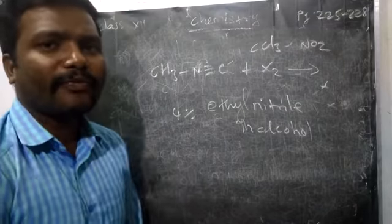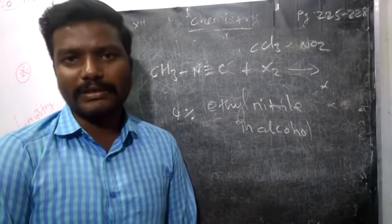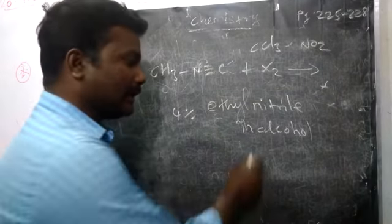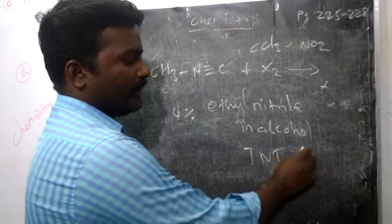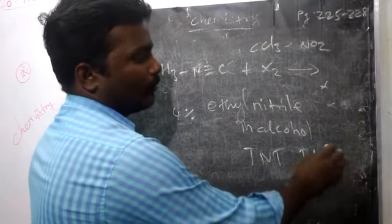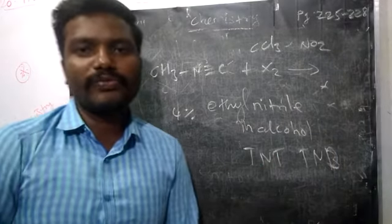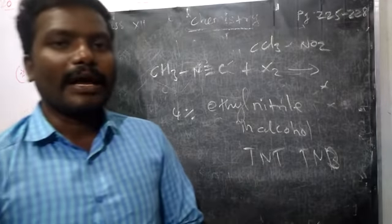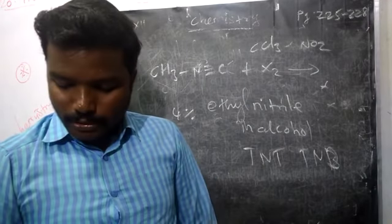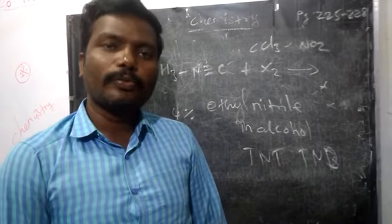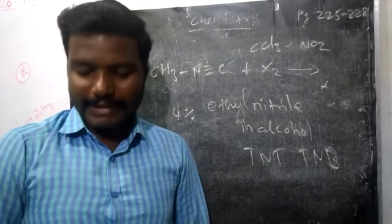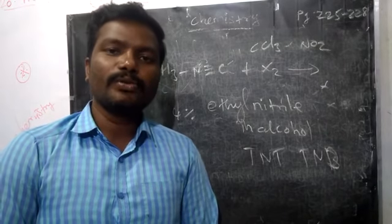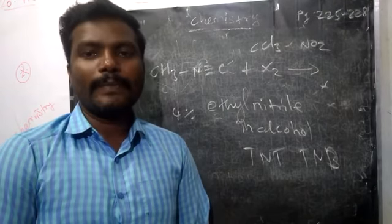Many other compounds we can prepare by using nitrobenzene: lubricating oils, TNT (trinitrotoluene), TNB (trinitrobenzene) — like many compounds we can prepare by using nitrobenzene. Now, the uses of cyanide as well as isocyanide: cyanide is used to prepare a large number of other compounds, acting as an intermediate. In the textile industry also, we are using cyanide compounds.